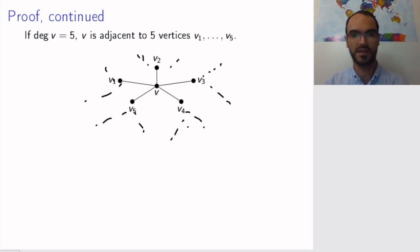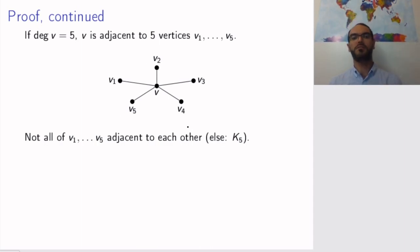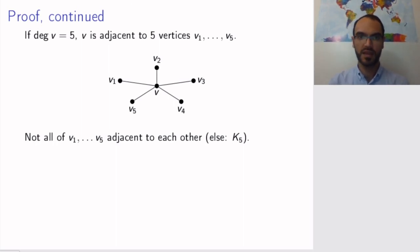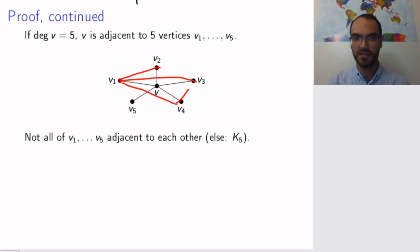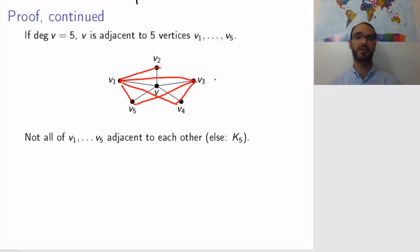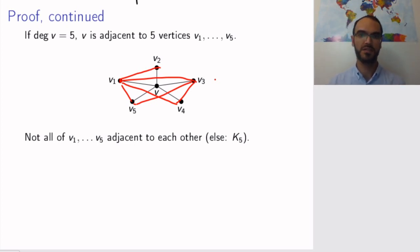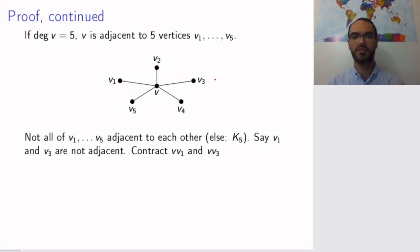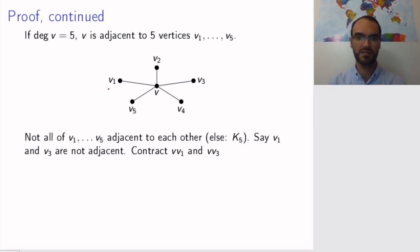So let's see how that works. Not all of v1 to v5 are adjacent to each other. If they were — assume all of them are adjacent to everybody else — then we have five vertices all adjacent to each other, meaning we have a complete graph K5. But if we have a K5 in our graph then our graph is not planar, and since our graph is planar we know this doesn't happen. So we know that at least two vertices among v1 to v5 are not adjacent to each other — let's say v1 and v3 are not adjacent.